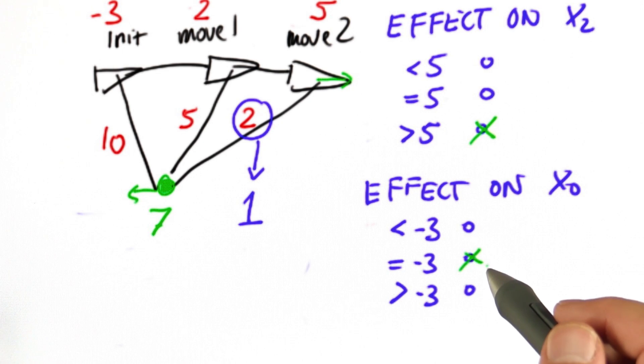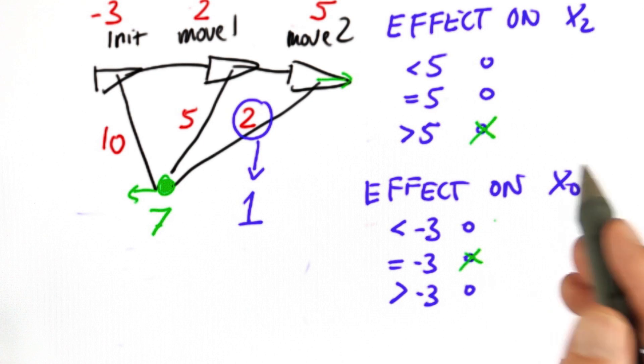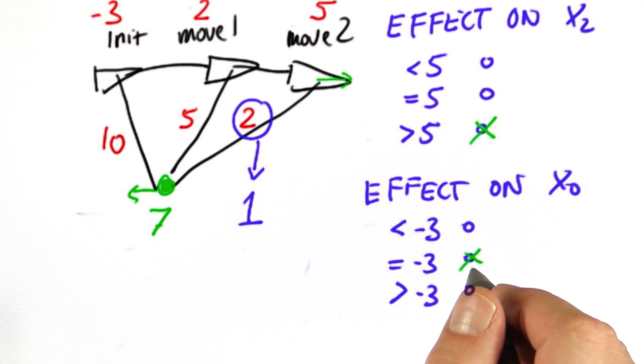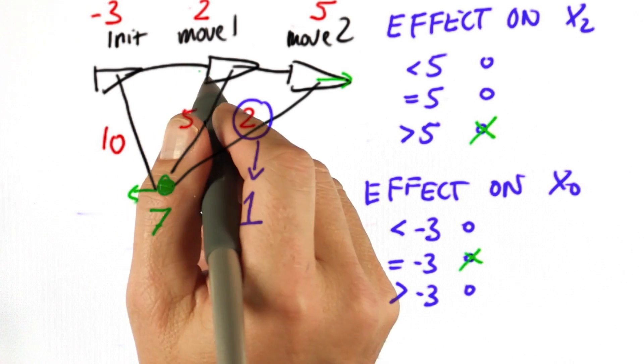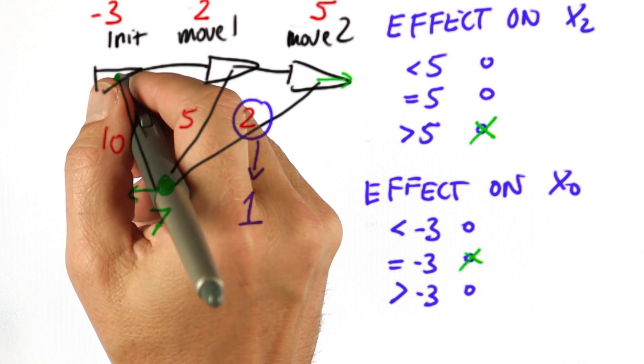The reason why the initial position doesn't change is the only information we have about the absolute coordinate location is the very first initial position anchor that we said it has to be minus 3.